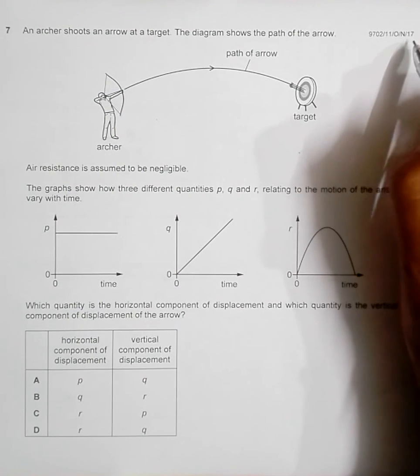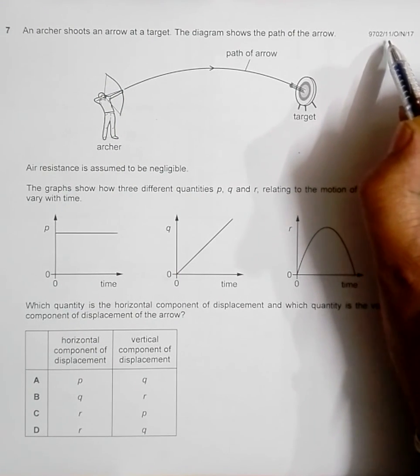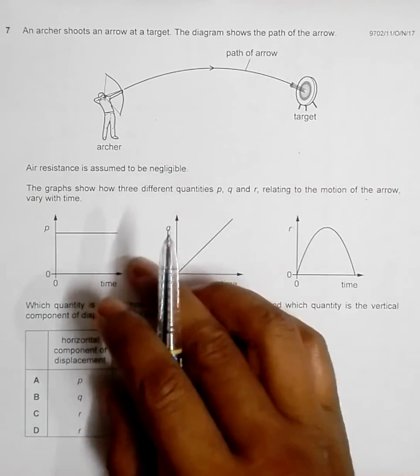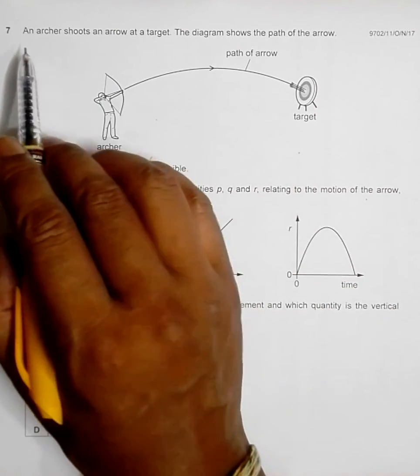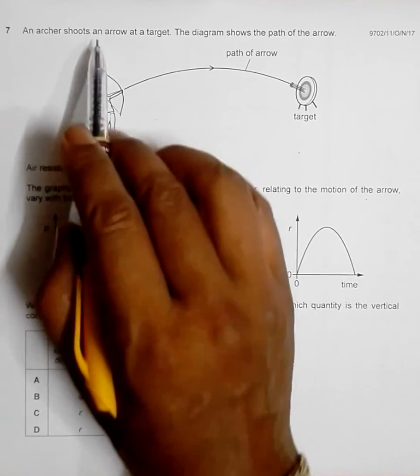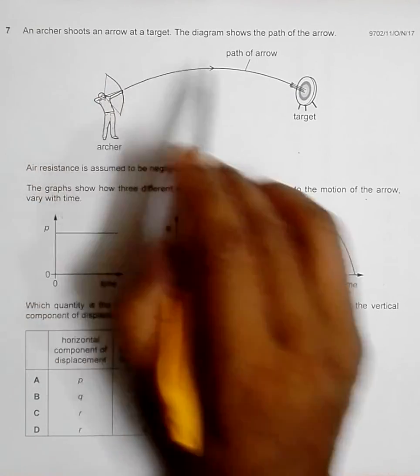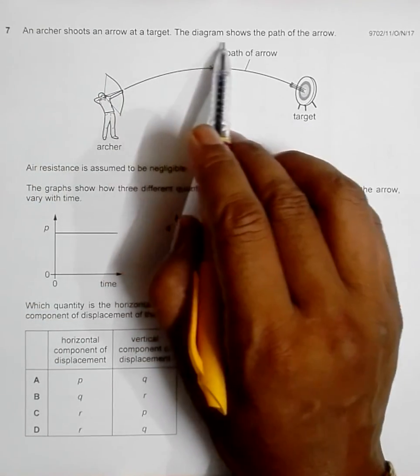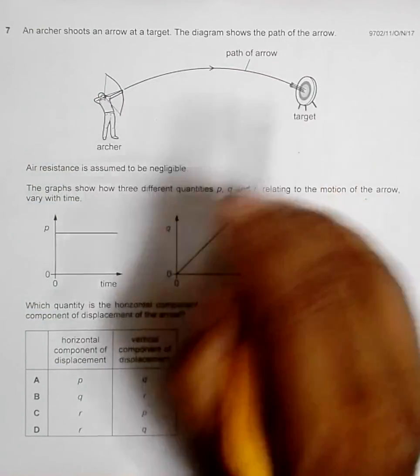This is question 7 from the 2017 October November paper 1. It shows an archer shoots an arrow at a target, and the diagram shows the path of the arrow.